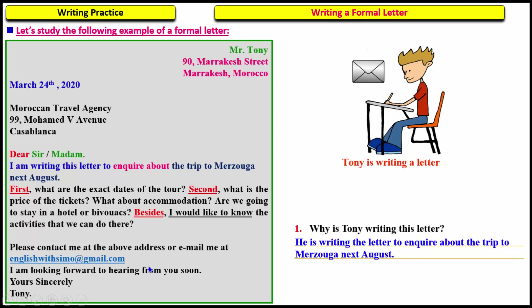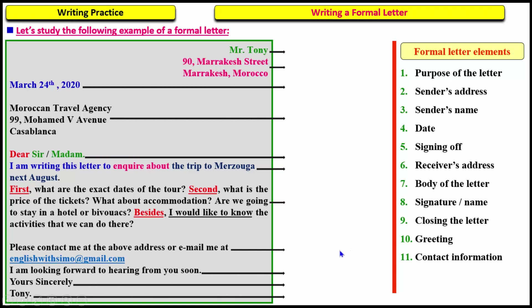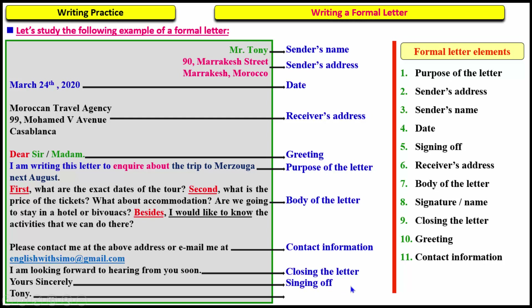Like we mentioned before, letters always have certain parts and each part has its own name. This is an example of a formal letter. Pause the video and match these elements with the appropriate parts of the letter. The elements are: sender's name (Mr. Tony), sender's address, date, receiver's address, greeting, purpose of the letter, body of the letter, contact information, closing, signing off, and name or signature.